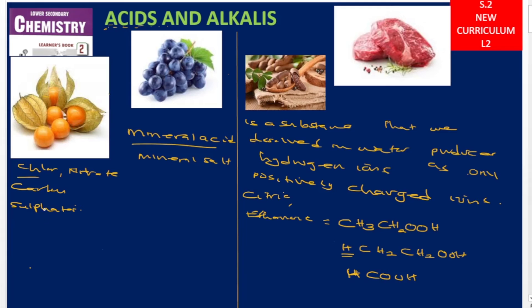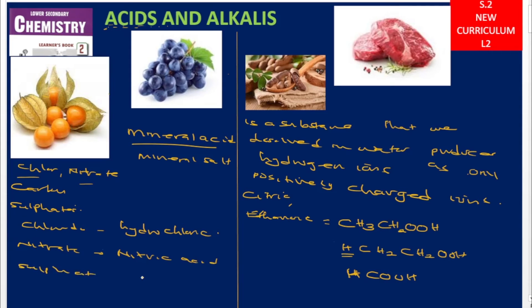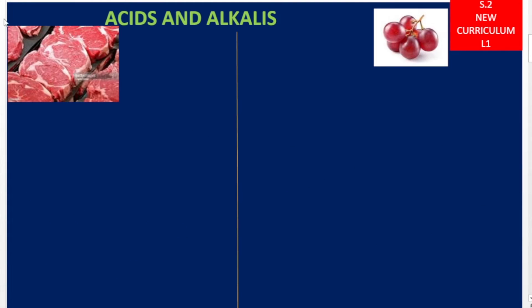The chloride salts give us an acid called hydrochloric acid. The nitrate salts give us nitric acid. The sulfates give us sulfuric acid. The carbonates give us carbonic acid. So examples of mineral acids include hydrochloric acid, nitric acid, sulfuric acid, carbonic acid, and also sulfurous acid and nitrous acid.